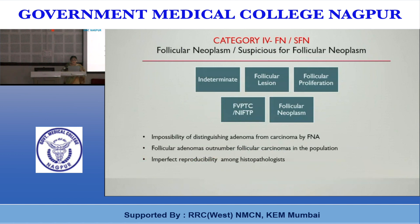Coming to Category 4: follicular neoplasm or suspicious for follicular neoplasm. There are two terms, but use only one consistently in your hospital. Cytologic diagnosis of follicular lesions is not an exact science and is rather a bane for the pathologist. Prior to the introduction of TBSRTC, there was great variability in terminology — some called it proliferative lesion, indeterminate, or neoplasm.